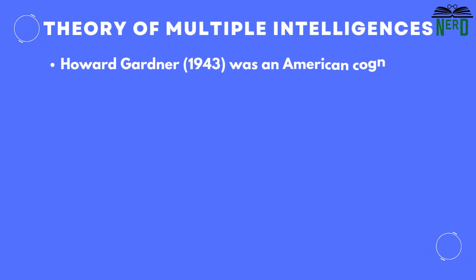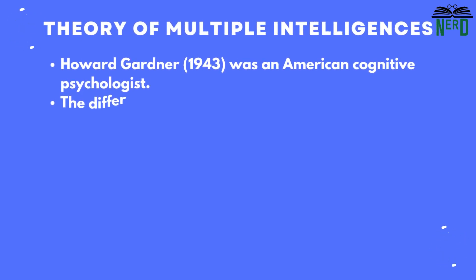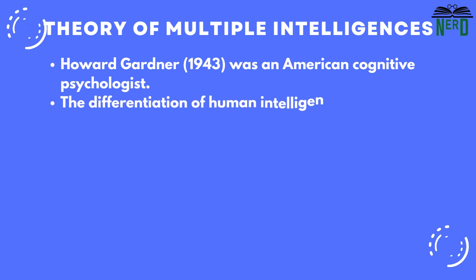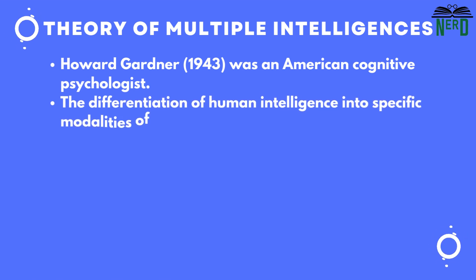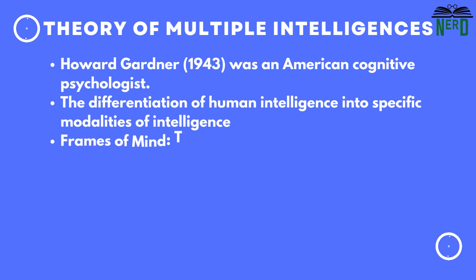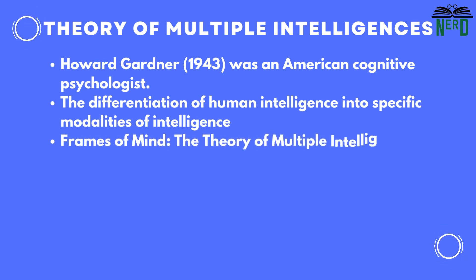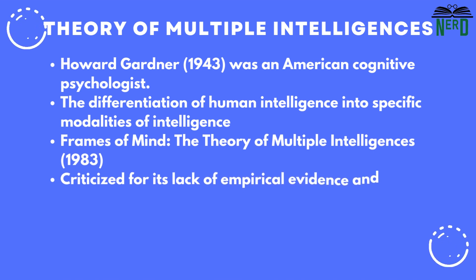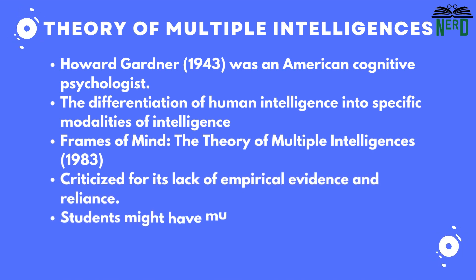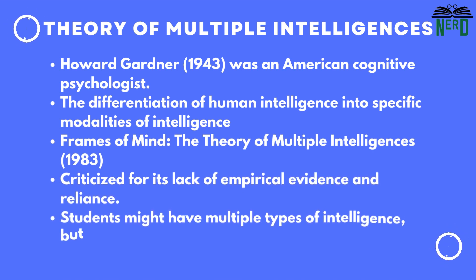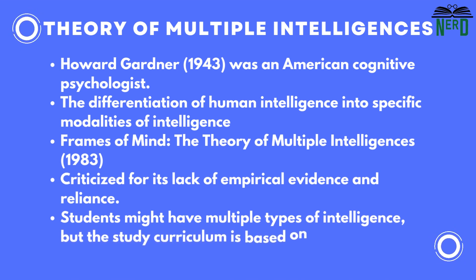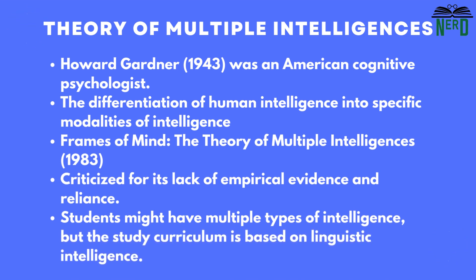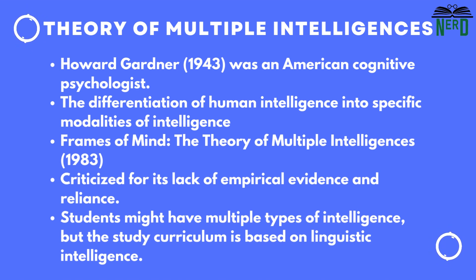Howard Gardner was an American cognitive psychologist and author best known for his theory of multiple intelligences. This theory proposes differentiating human intelligence into specific modalities rather than defining intelligence as a single, general ability. Howard Gardner described eight abilities which manifest multiple intelligences in his book Frames of Mind: The Theory of Multiple Intelligences, which was published in 1983.